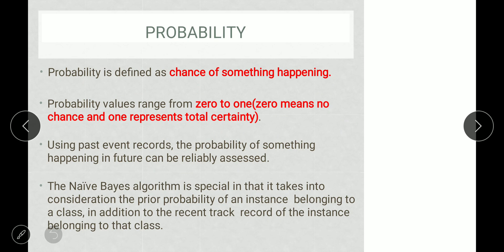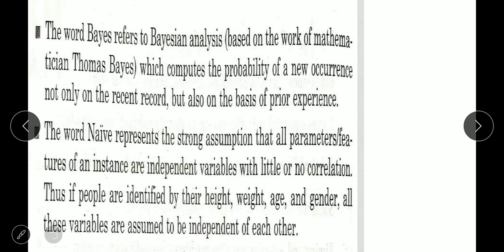What is probability? Probability is defined as the chance of something happening. The probability value ranges from zero to one — zero refers to no chance and one refers to total certainty. Using past event records, the probability of something happening in the future can be assessed. The Naive Bayes algorithm is special in that it takes into consideration the prior probability of an instance to make predictions about future things.